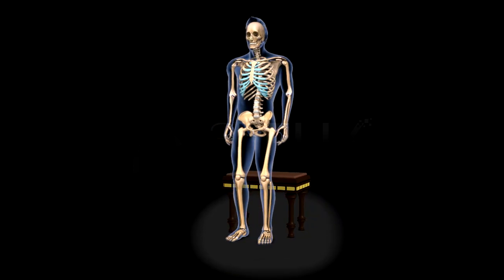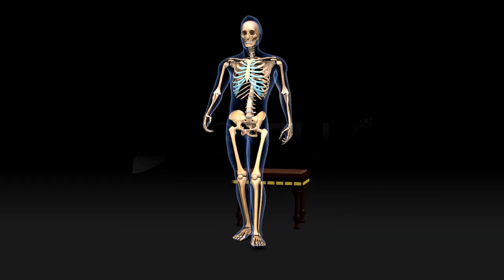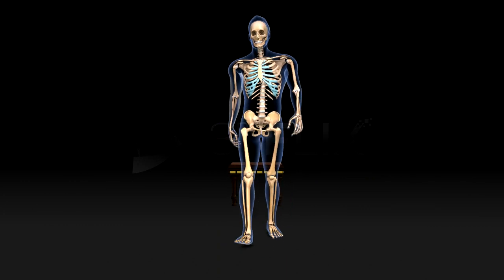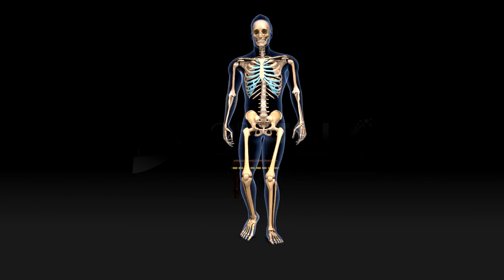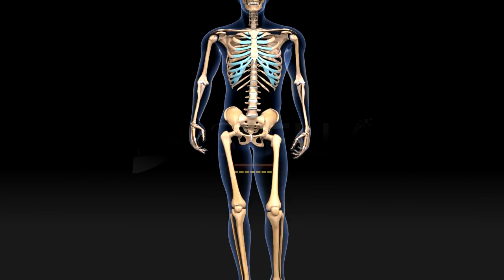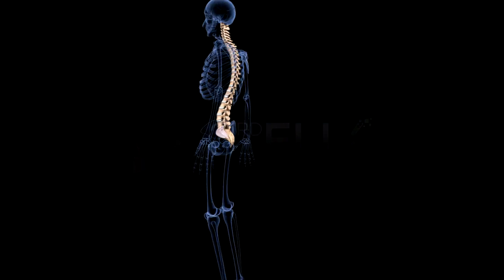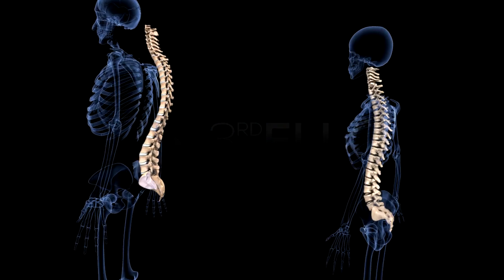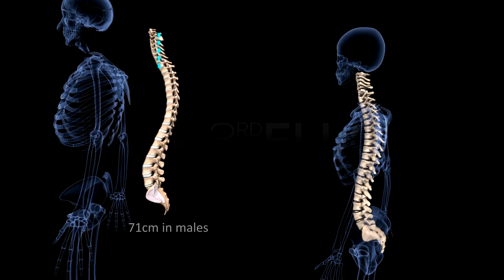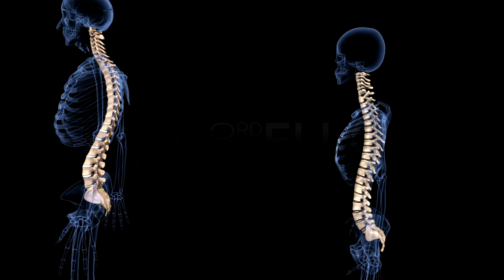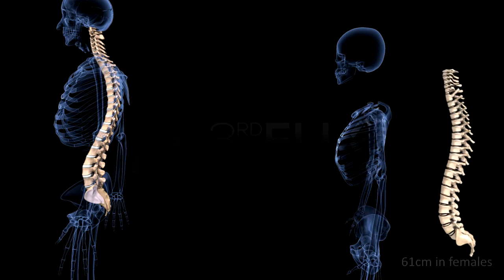These curvatures help in keeping the body straight. They also keep the centre of gravity between the heels, so that the erect posture is maintained during walking. The length of the vertebral column is about 71 cm in males and about 61 cm in females.